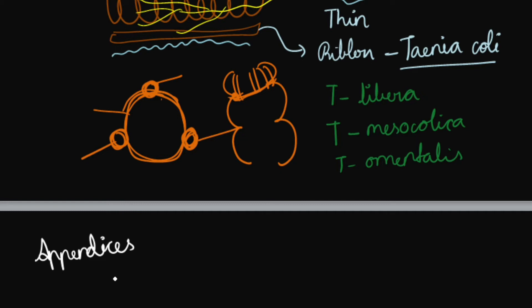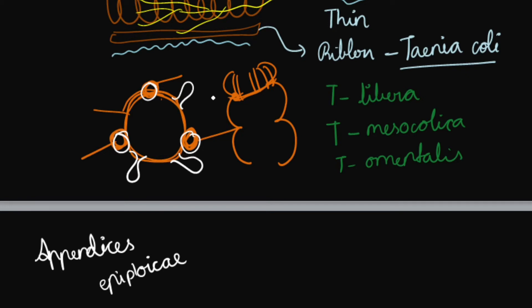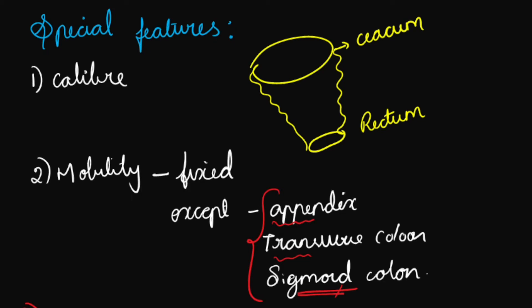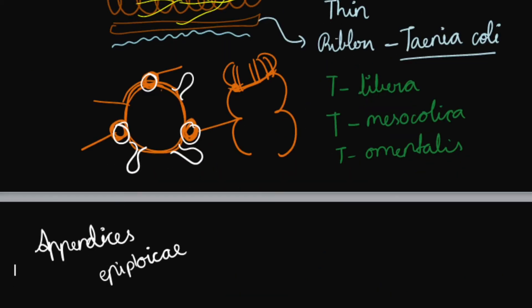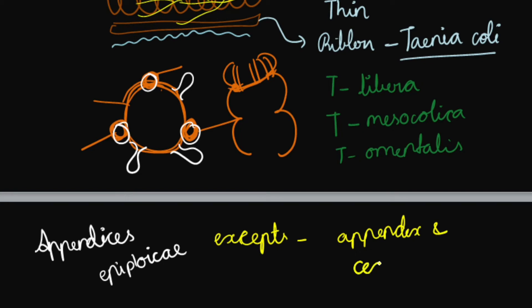Appendices epiploicae are small bags of fat covered by peritoneum, arising from the large intestine near the taeniae coli. They are present all over the large intestine, with a few exceptions — they are not seen in the appendix and cecum.